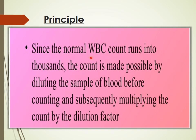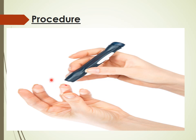The principle of this practical is that the normal WBC count runs in the thousands, and counting is made possible by diluting the sample of blood before counting and subsequently multiplying the count by the dilution factor.